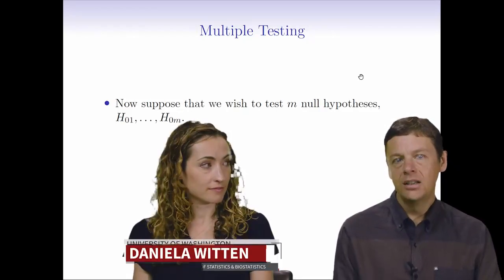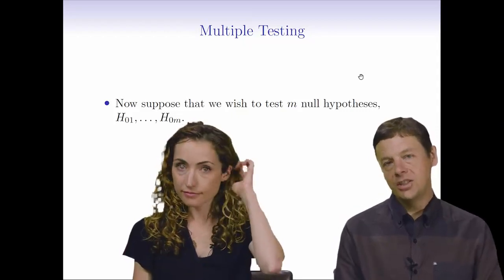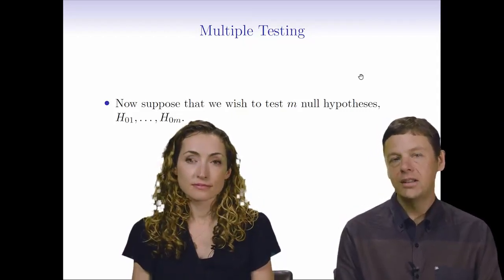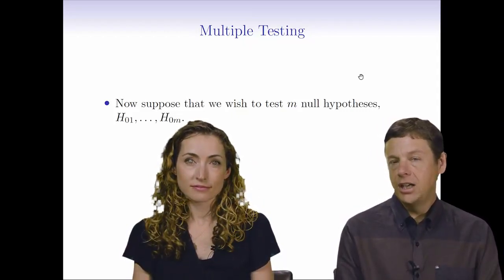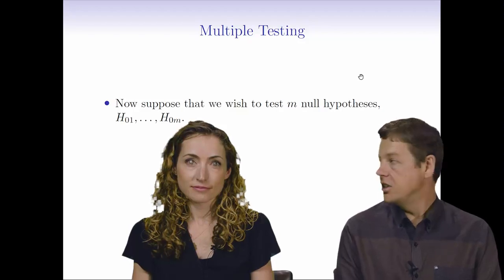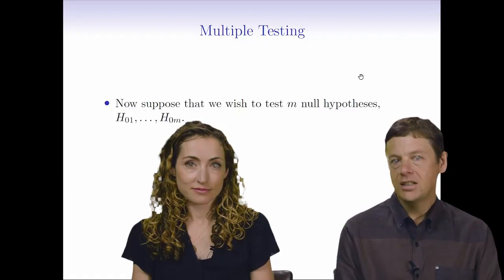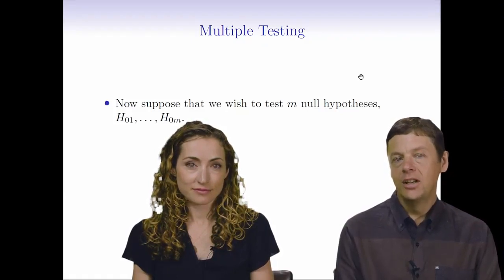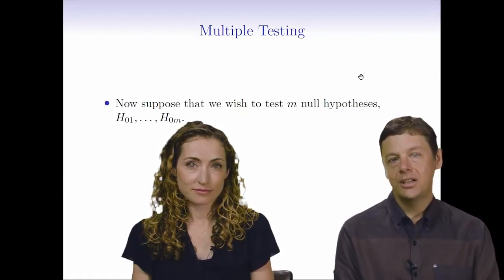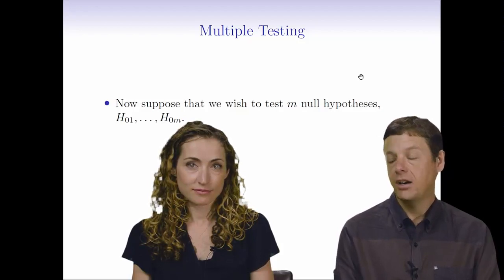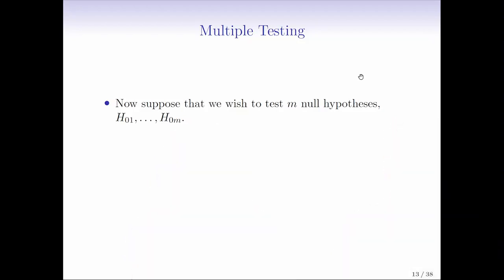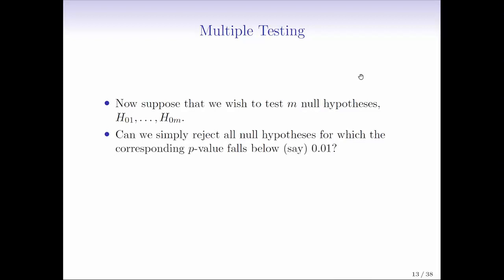As I mentioned at the start, we've had this concept in statistics forever, but the typical value for M was very small, single digits, two or three, something like that. The methods for adjusting in that situation worked pretty well. But these days, we often have situations where we want to test thousands or tens of thousands of hypothesis tests, and the complications from that become even larger.